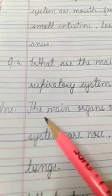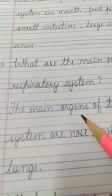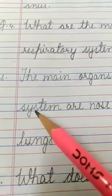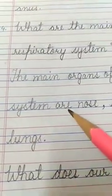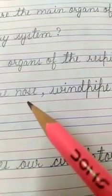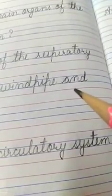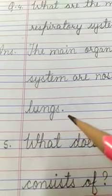Now, come to the answer. The main organs of the respiratory system, S-Y-S-T-E-M, system are nose, windpipe and lungs, L-U-N-G-S, full stop.